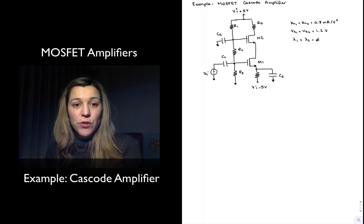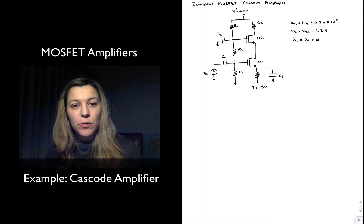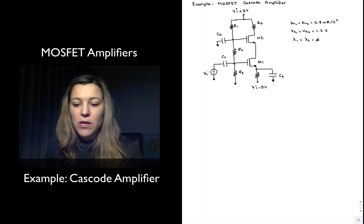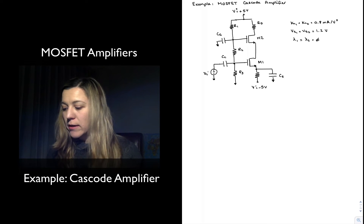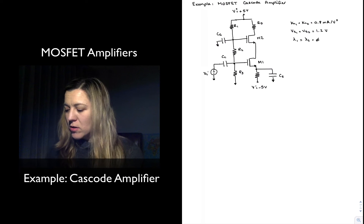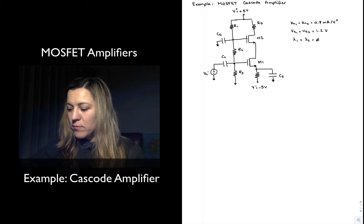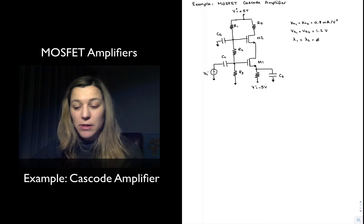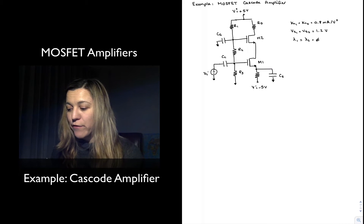Hello! In this video we are going to do an example analysis of a MOSFET multi-stage amplifier, in particular a cascode amplifier, which is going to be powered by two supplies: plus and minus 5 volts.